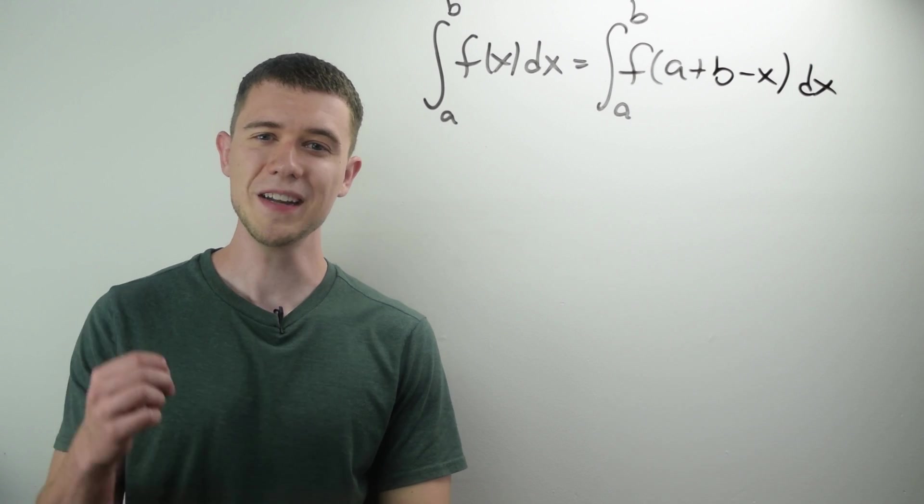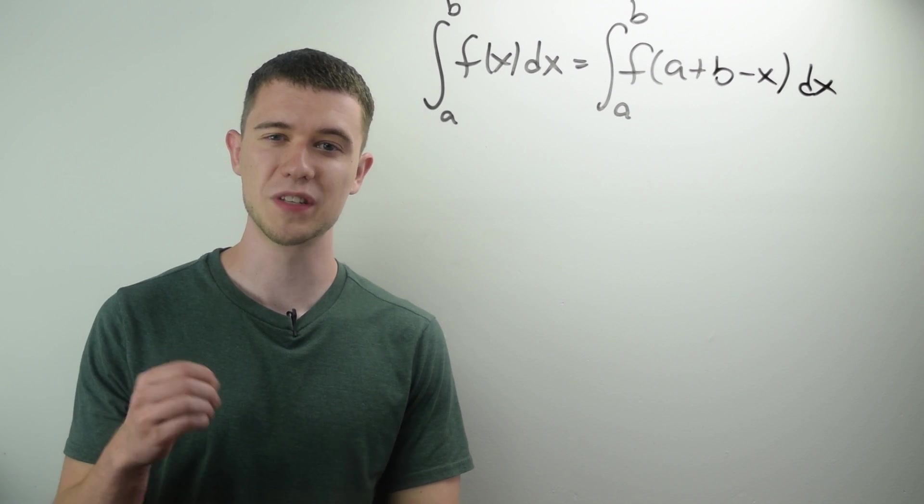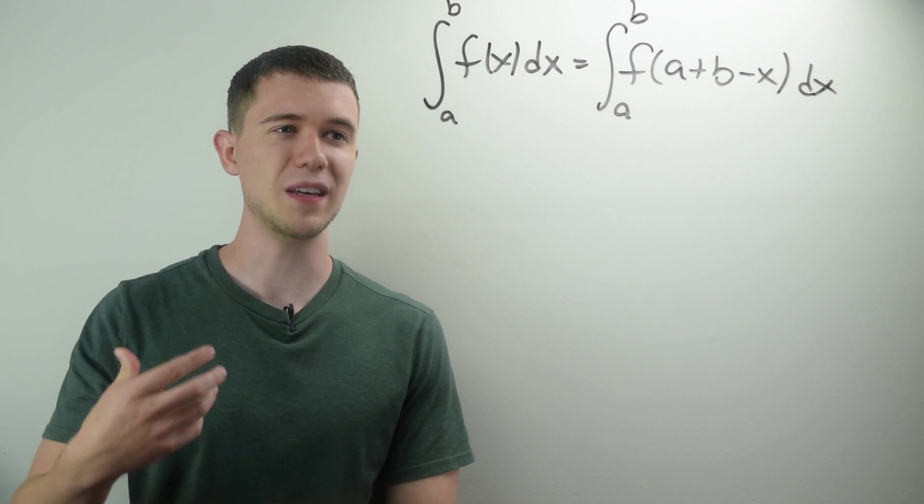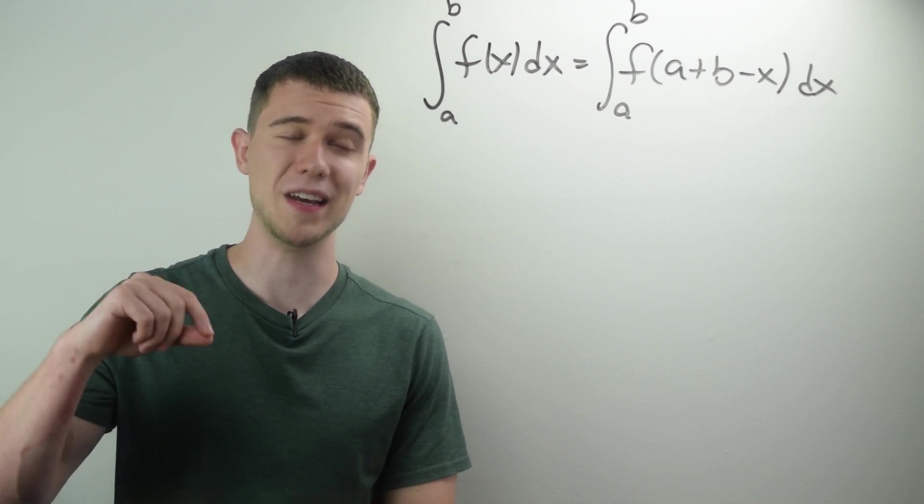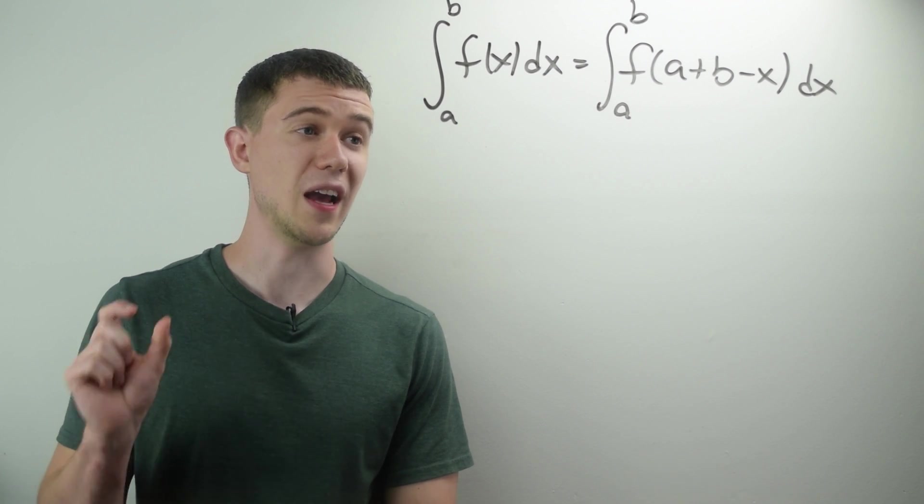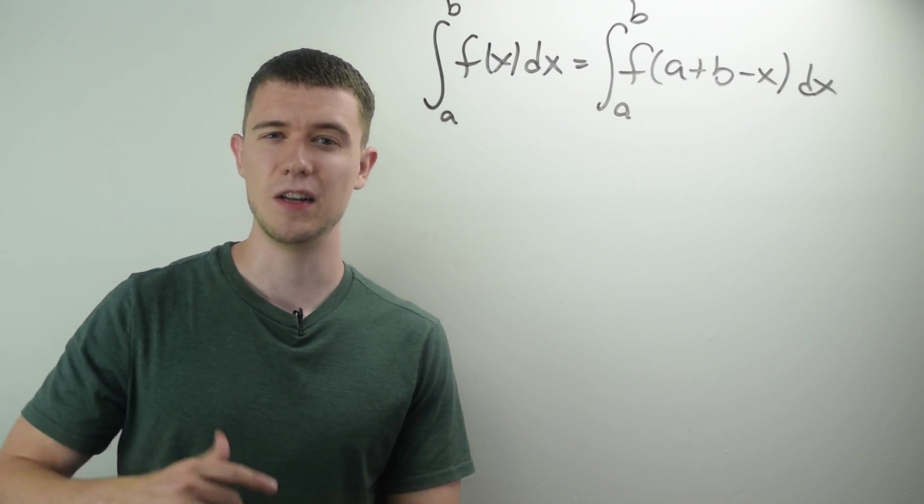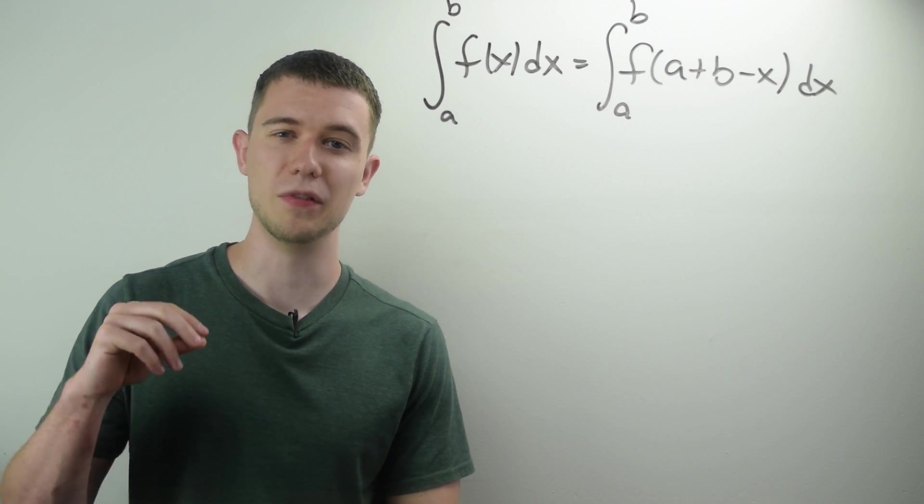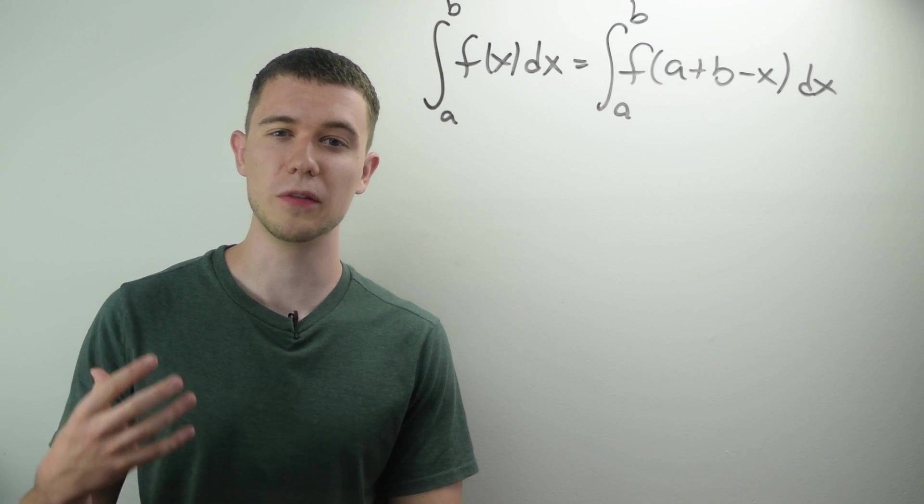You have the antiderivative of arc cosine with this simple equation. You didn't have to use integration by parts. How great was that? My next trick is for definite integrals, and it's a pretty quick one. It says that the integral from a to b of f of x dx is the same as the integral from a to b of f of a plus b minus x.